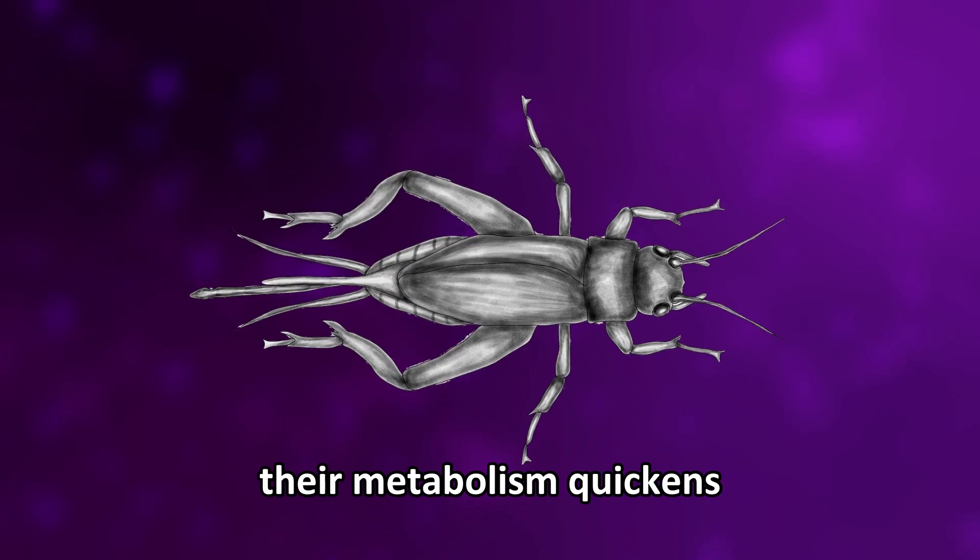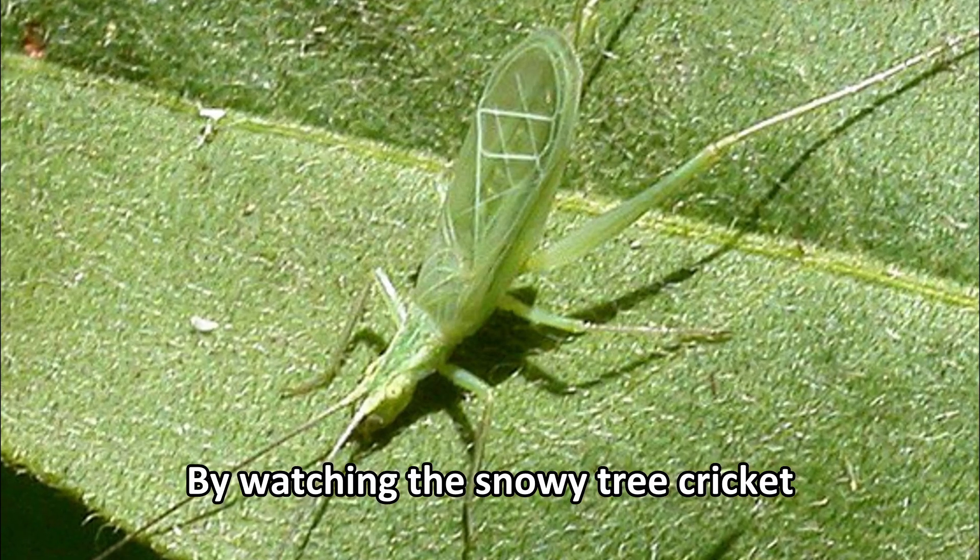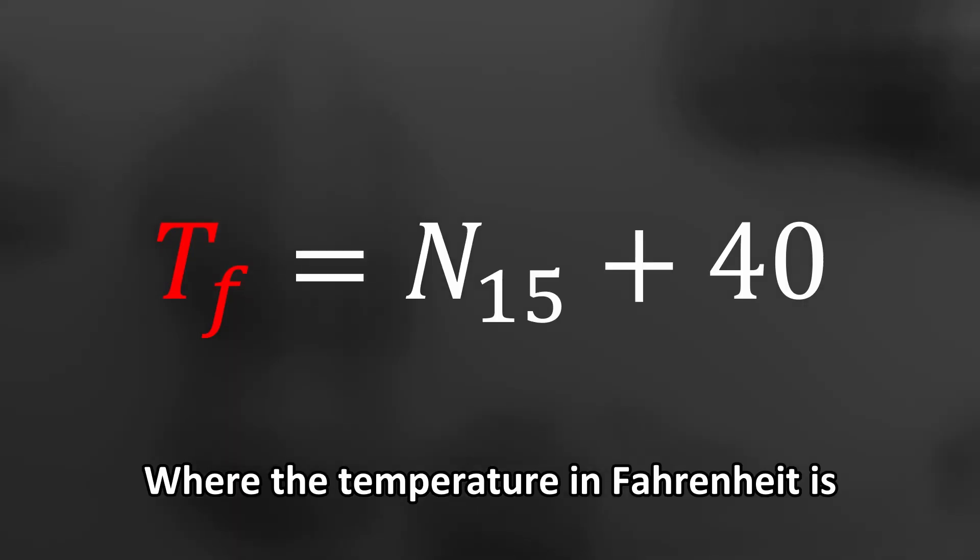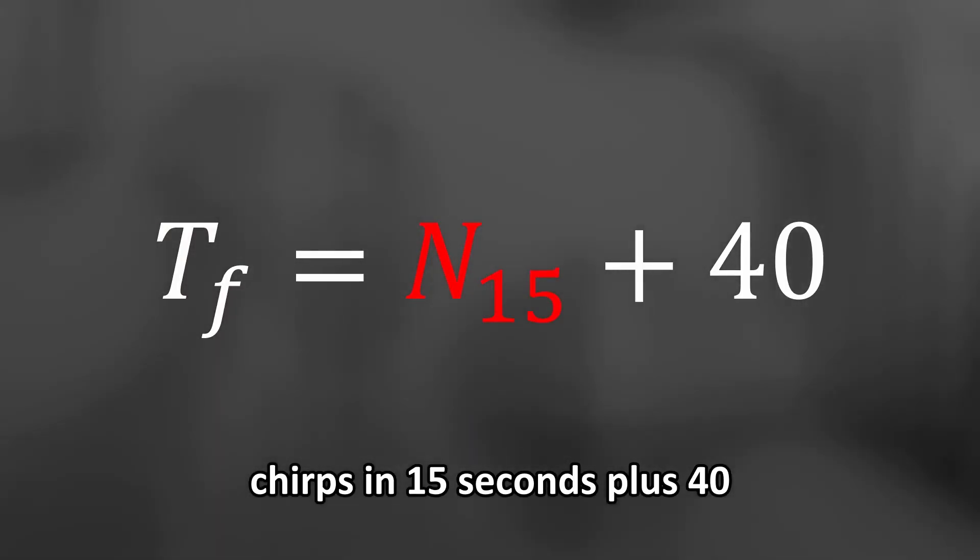So when it gets warmer their metabolism quickens and they chirp at a faster rate. By watching the snowy tree cricket, Dolbear formulated his law, where the temperature in Fahrenheit is equal to the number of chirps in 15 seconds plus 40.